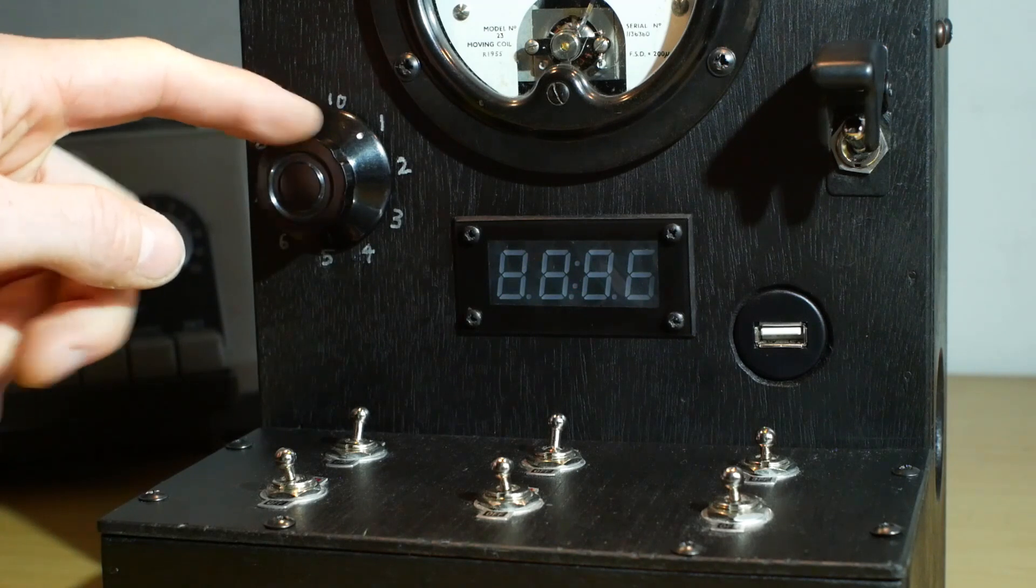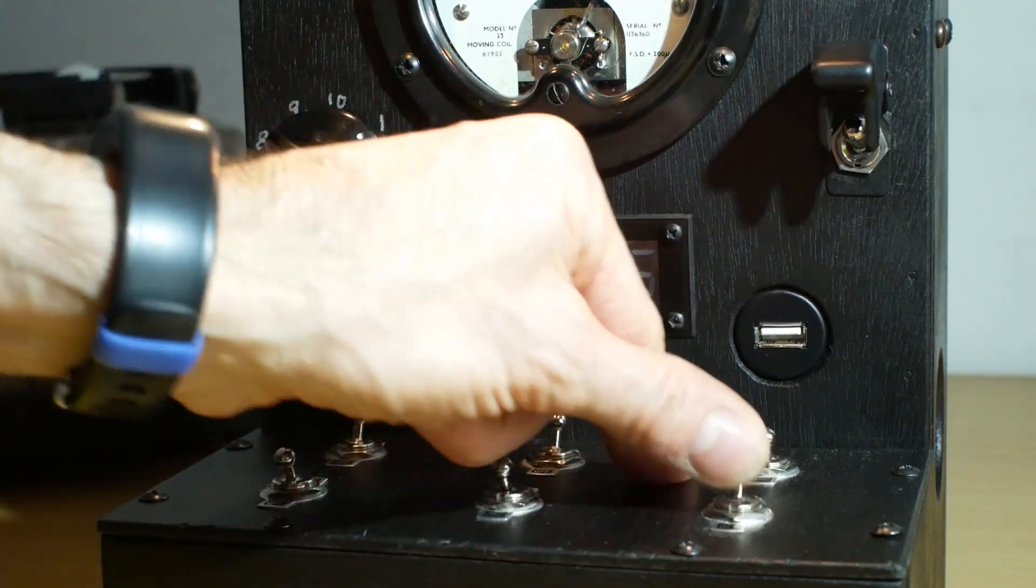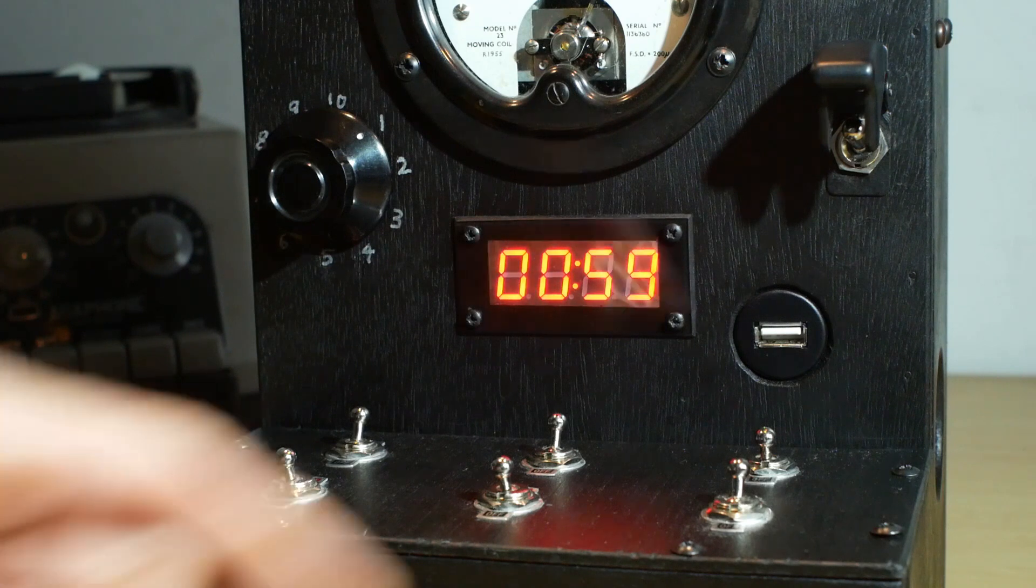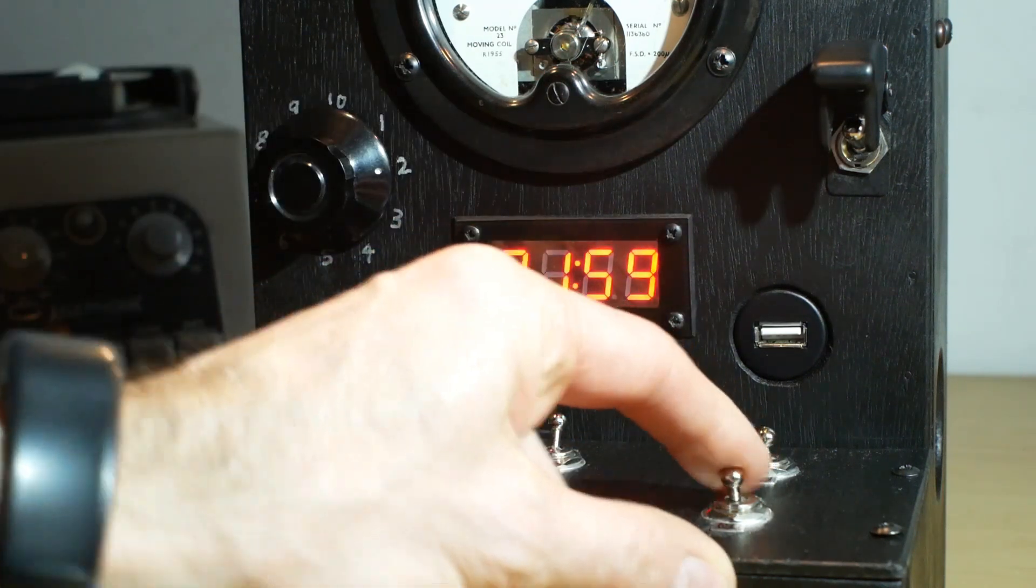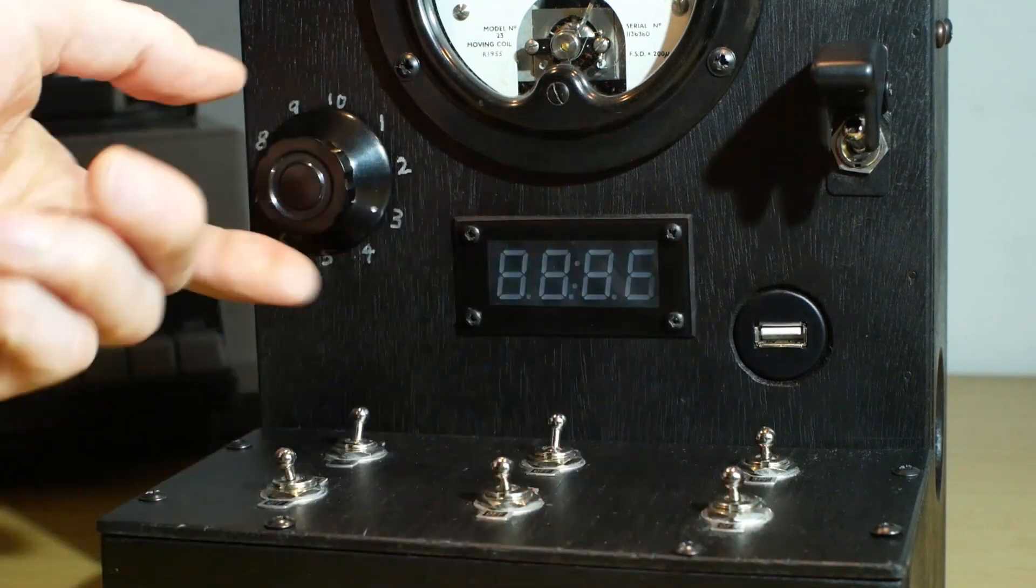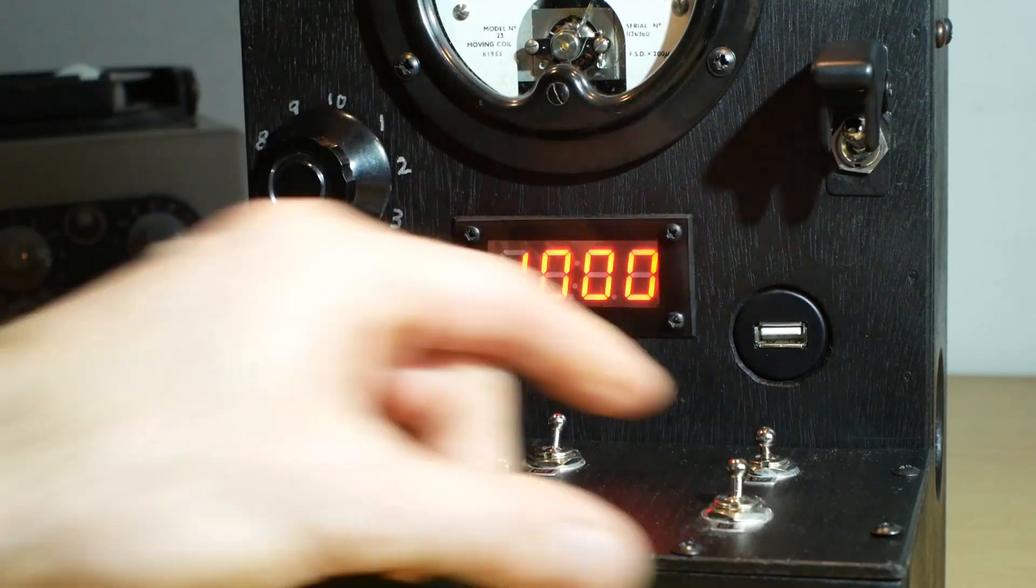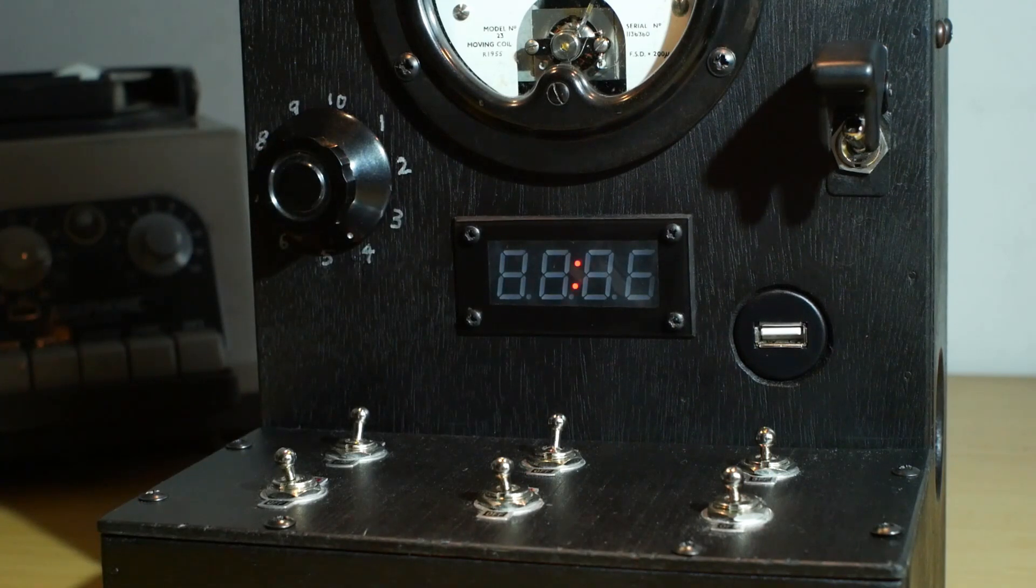So with the 10-way selector and this switch here, in position 1 you have a 1-minute timer. In position 2 it's a 2-minute timer. In position 3 it's 5 minutes. In position 4 it's 10 minutes, and so on, up to one and a half hours.